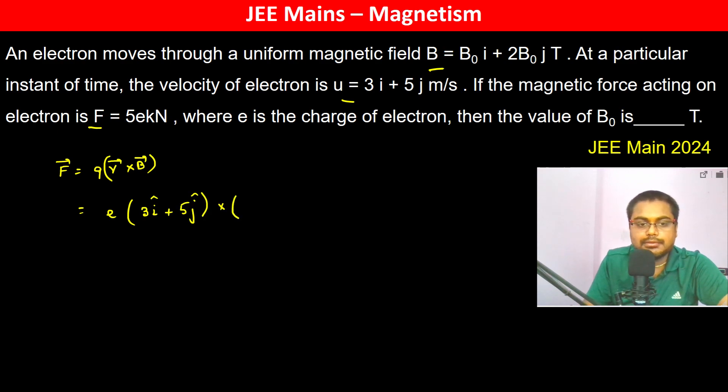The velocity is (3î + 5ĵ) cross B = (B₀î + 2B₀ĵ), which is e(î × î), which is zero. î × ĵ is k̂, so plus 2B₀ into 3k̂. ĵ × î is -k̂, therefore this becomes -5B₀k̂.